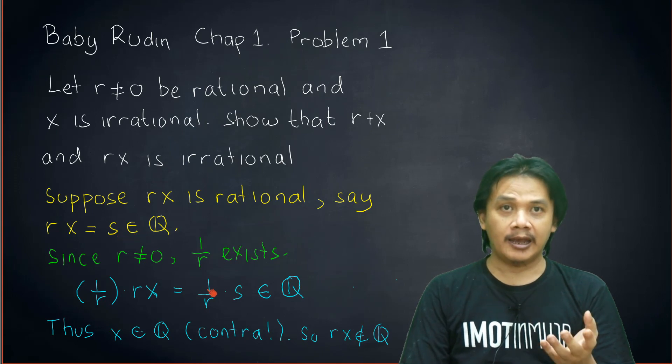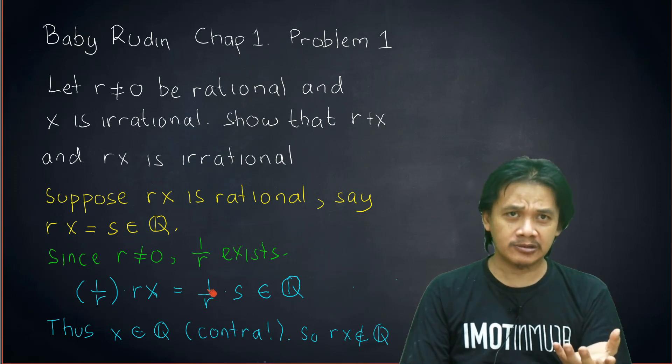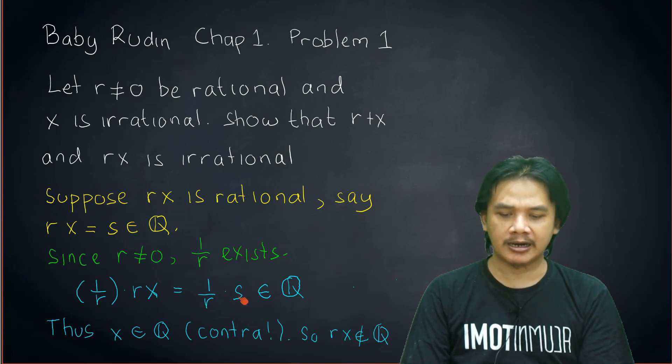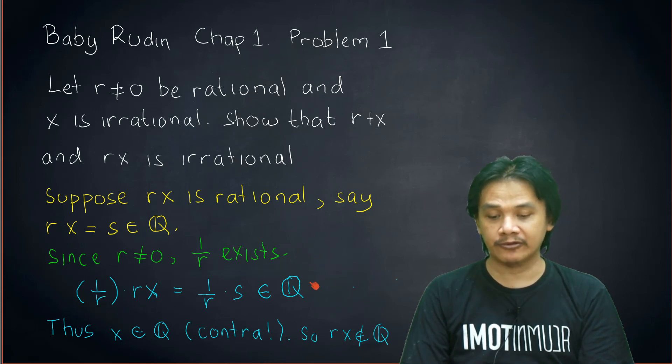And s is in ℚ because of this, right. And multiplication is closed in any field. So therefore, this 1/r times s is an element of ℚ.